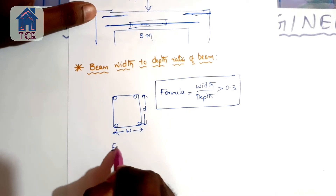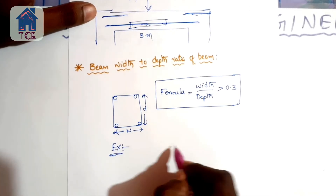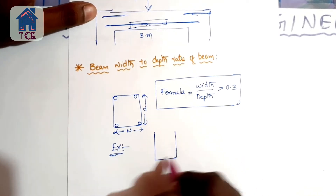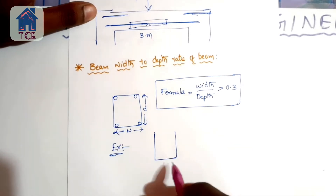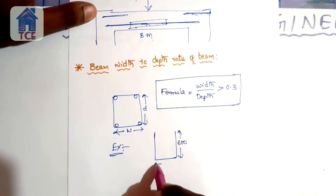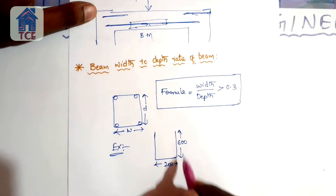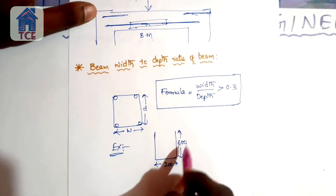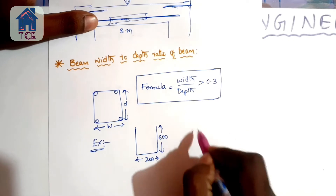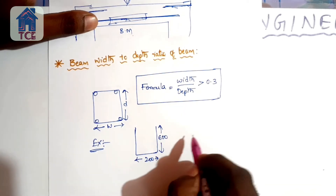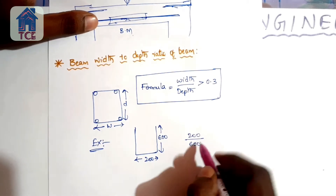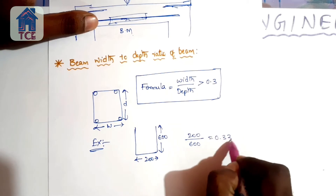For example, looking at the beam cross-section with all measurements: the depth of the beam is 600mm and the width is 200mm. Using the formula: width by depth = 200mm divided by 600mm. The result is 0.33.